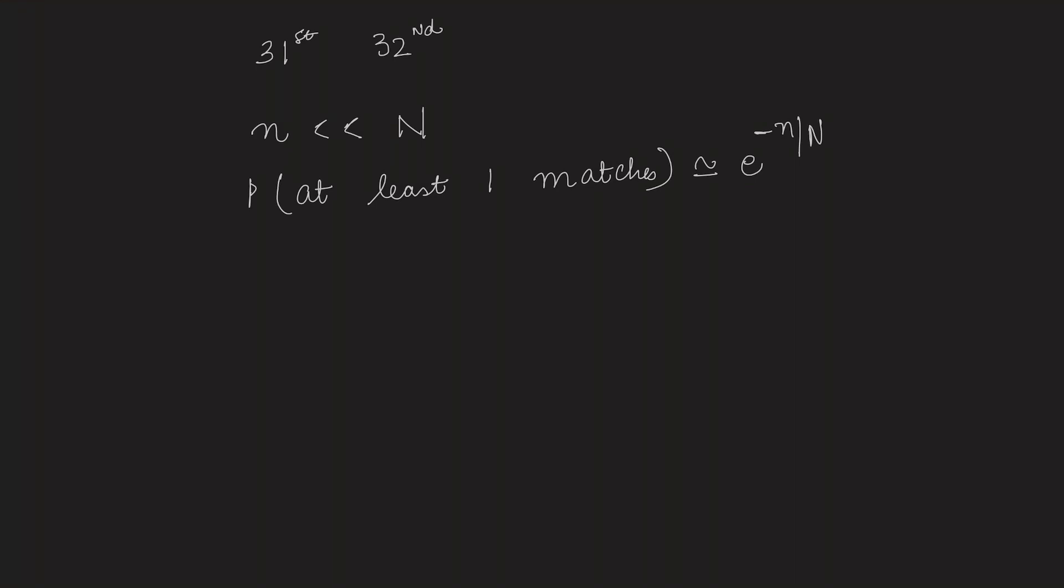In the birthday pairing problem, we saw that for r much less than the number of days in a year, the probability that at least one pair have the same birthday is approximately equal to e to the power minus r times r minus 1 by 2N.